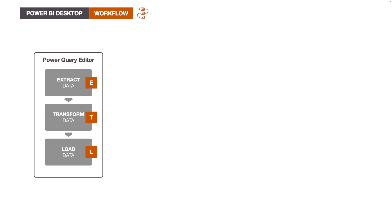A few things to note here: the transformations and changes we made in Power Query Editor are only applied to the subset of data available in the preview, which is typically around 1,000 rows. Any transformations or changes are only done in memory in Power BI Desktop — we are not changing the underlying data source, and it remains unchanged. So far, we have connected to the source files, transformed our data in the Power Query Editor, saved changes, and loaded the data. All this activity makes up the data collection and data preparation part of the BI process.